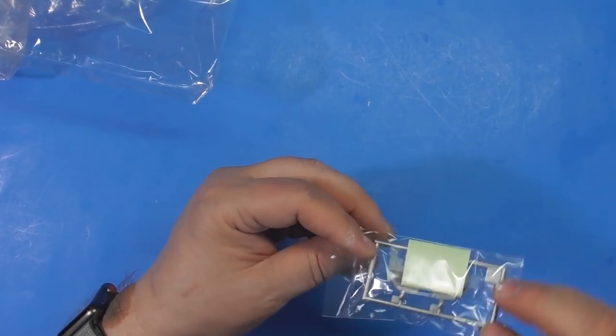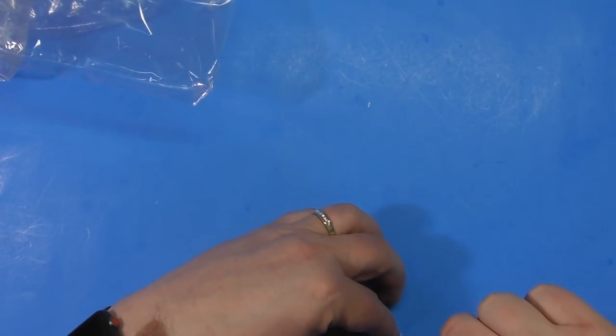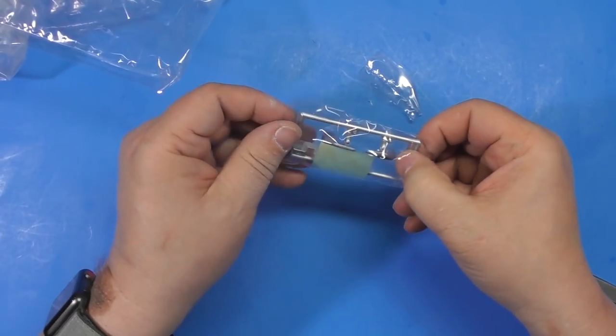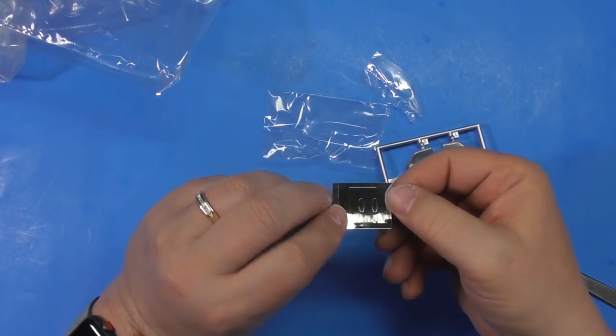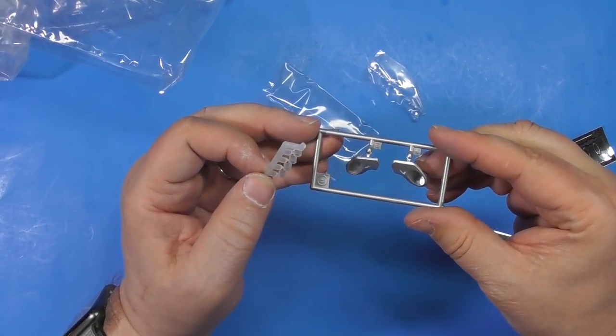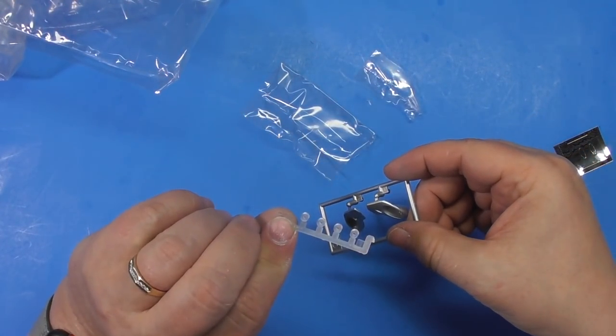This one. Headlights. And something else in here. There you go. Some chrome for the mirrors. Unusual for a Revell kit. There are the headlight parts. And the polycaps.